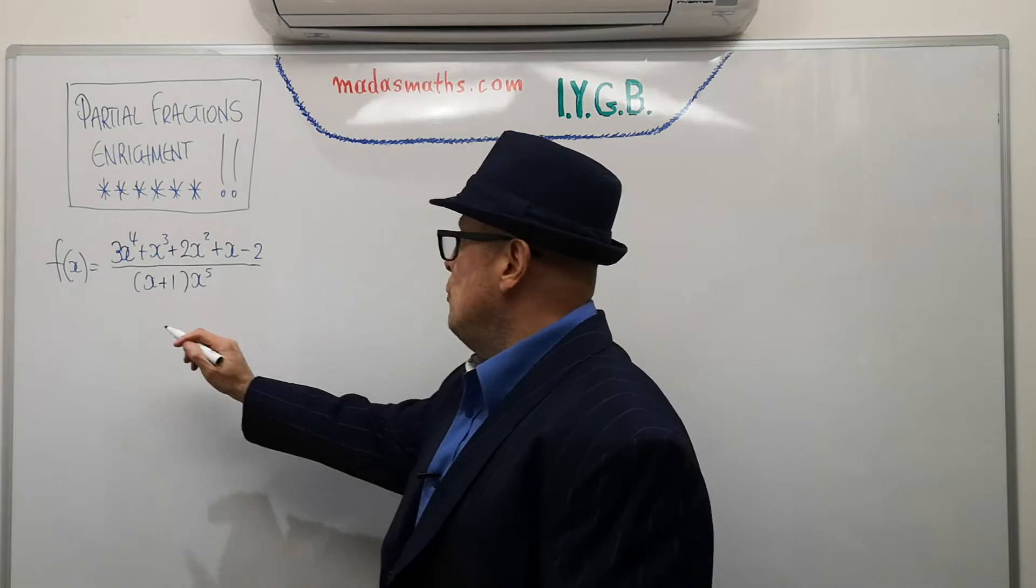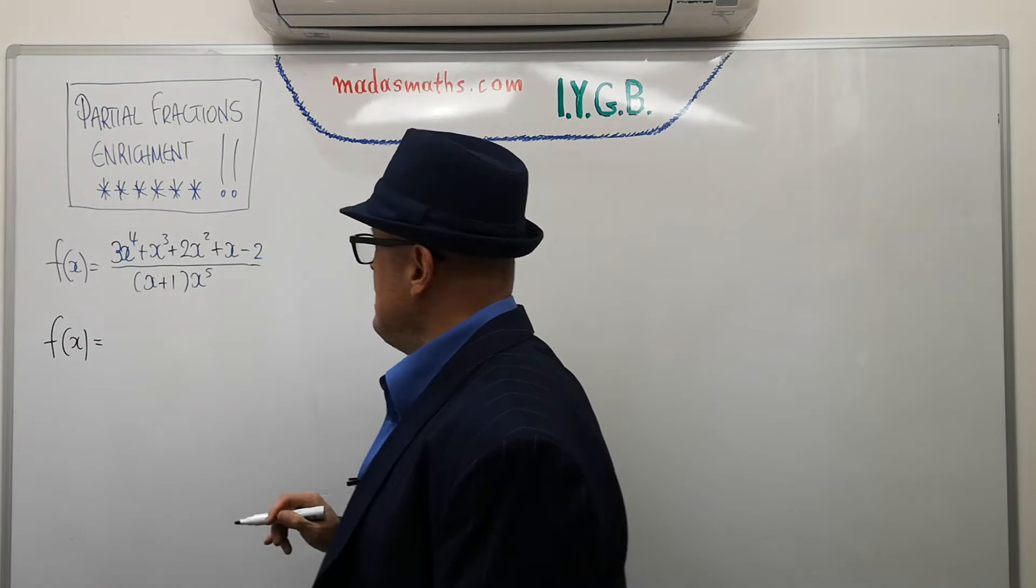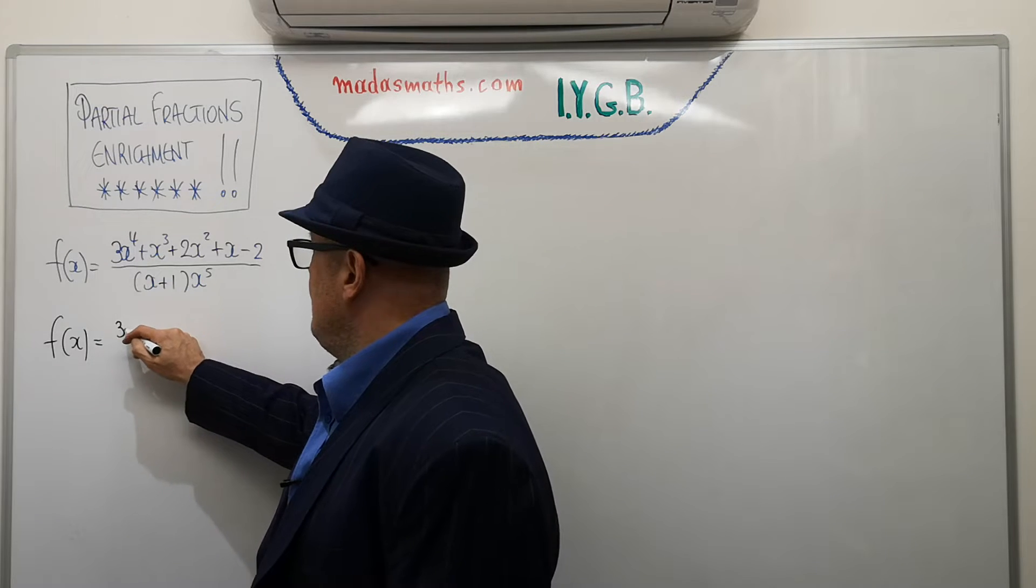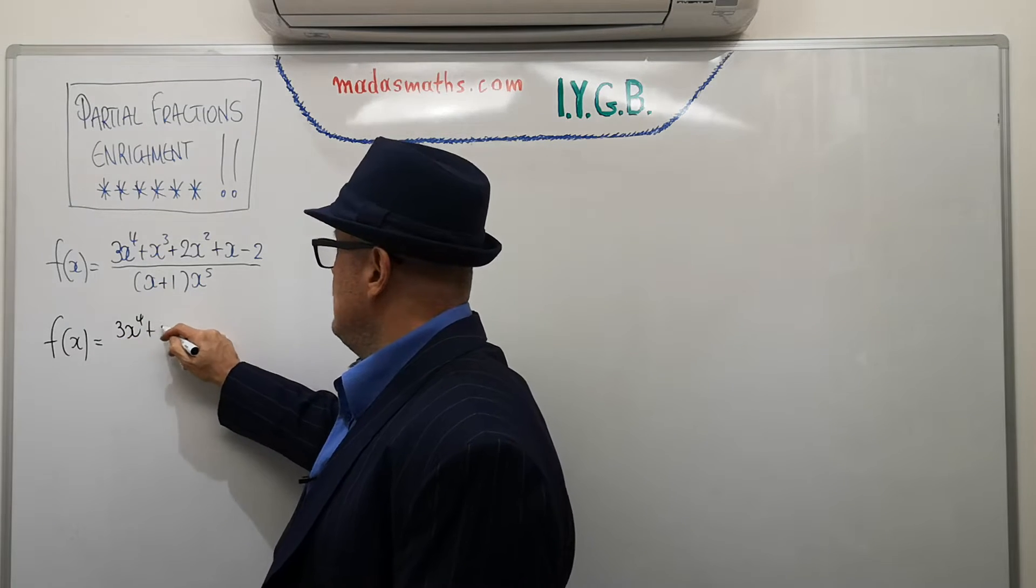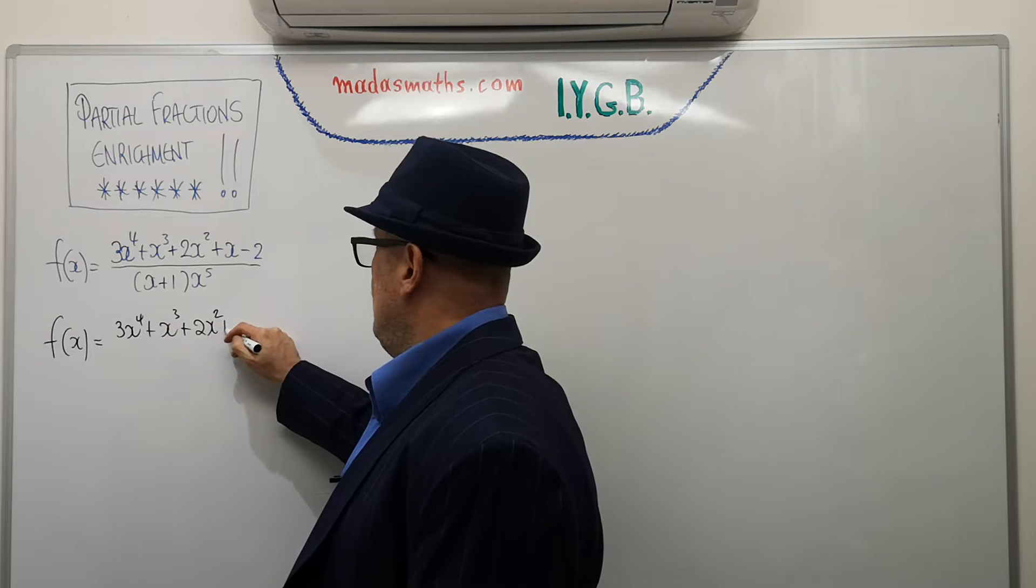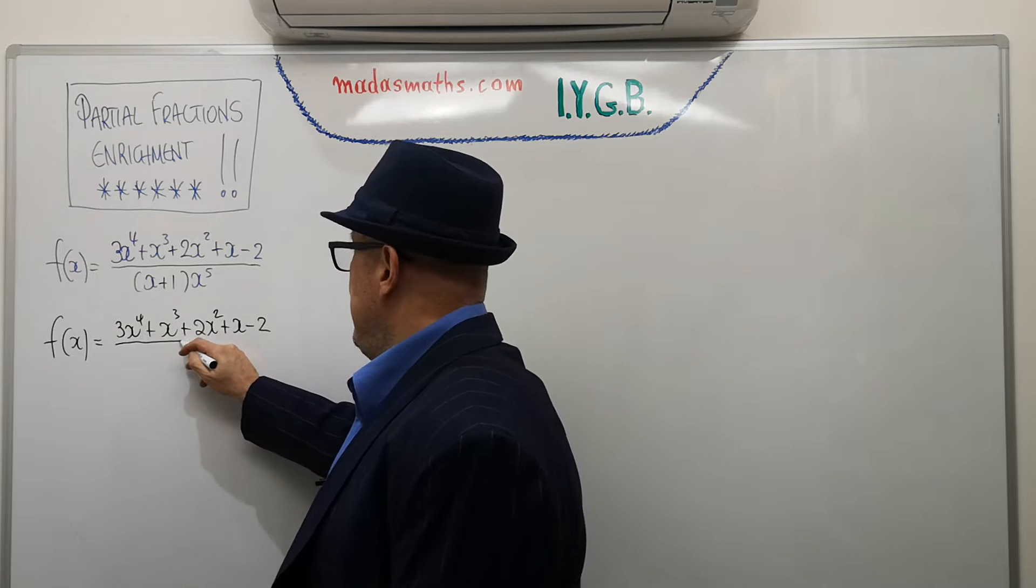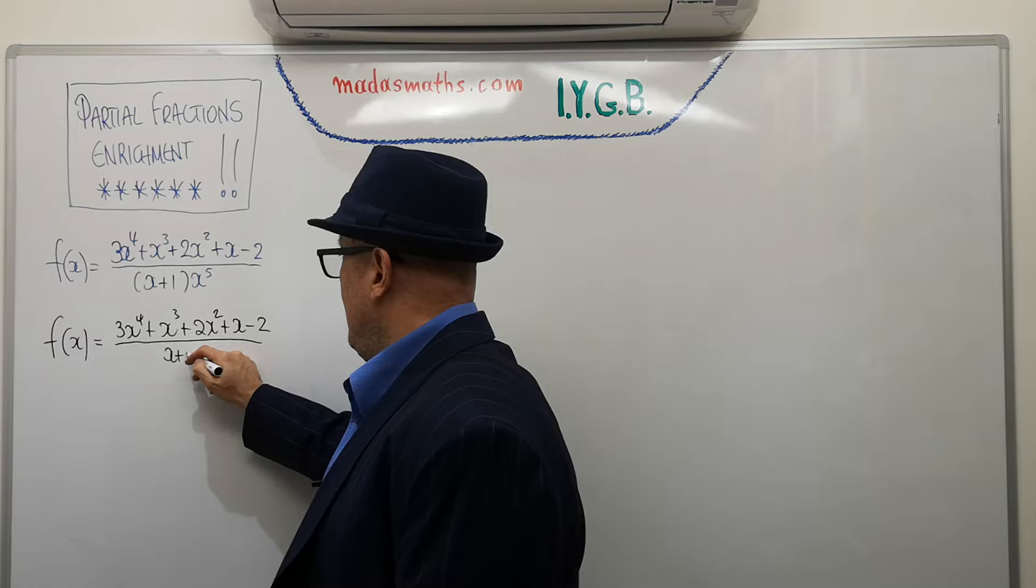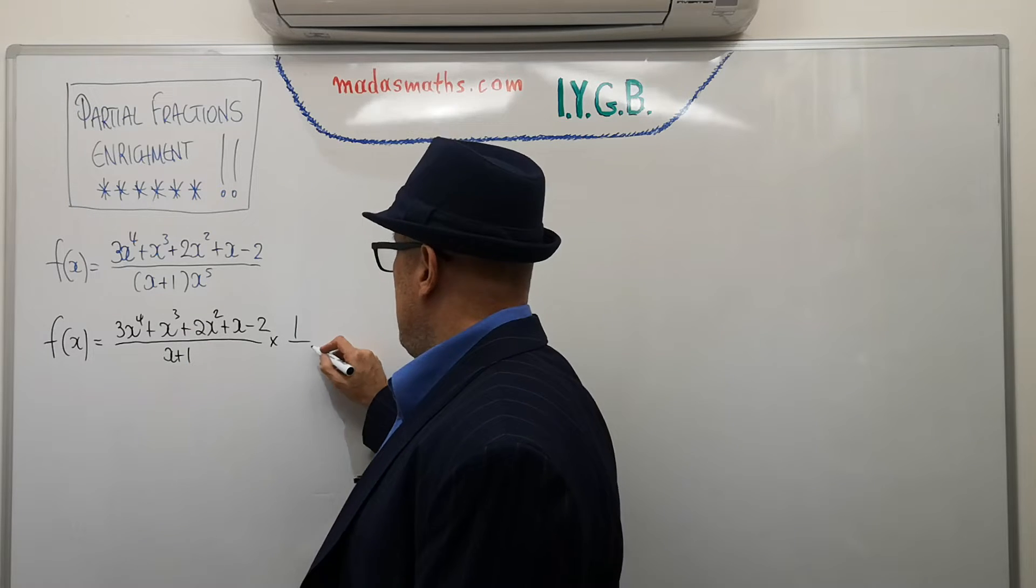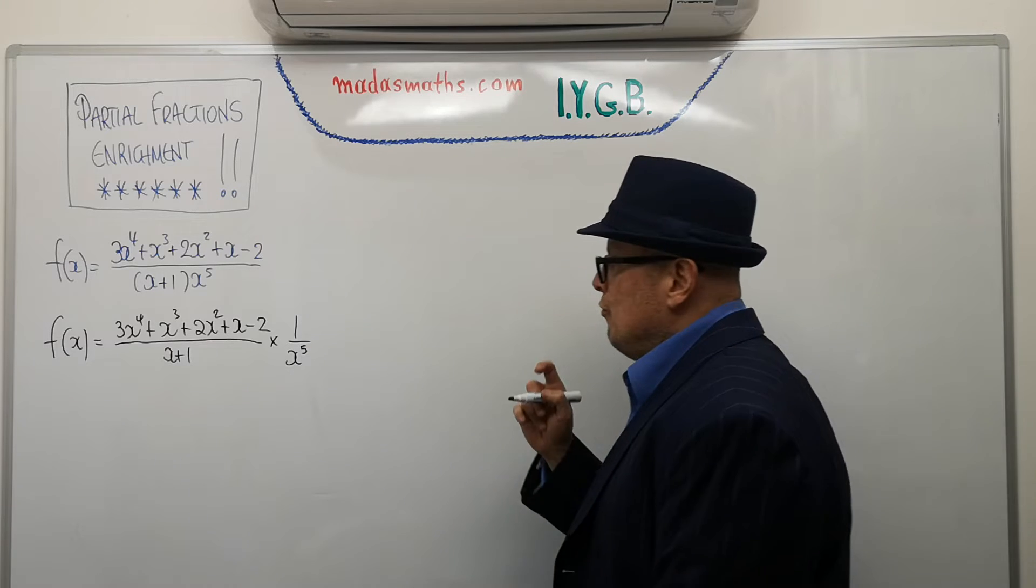First of all, I'm going to write it slightly differently. Not a major step this one. I'm going to write 3x to the 4, just the numerator as we have it in here, plus 2x squared plus x minus 2 over the x plus 1 and next to it, in a multiplicative sense, I'm going to write the 1 over x to the power of 5.